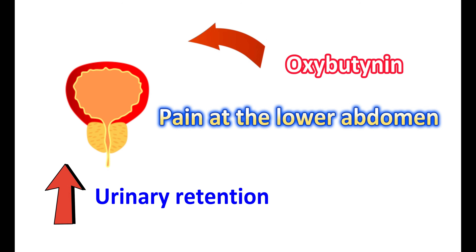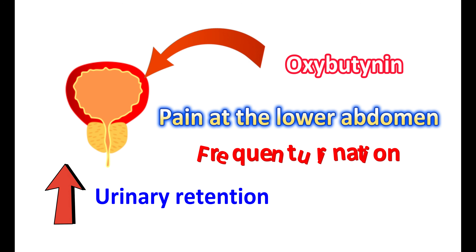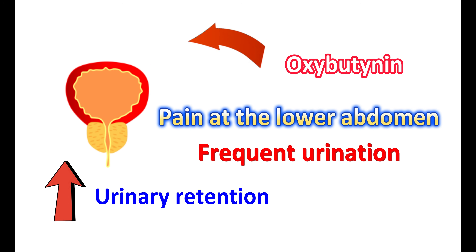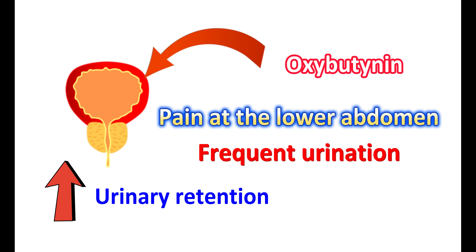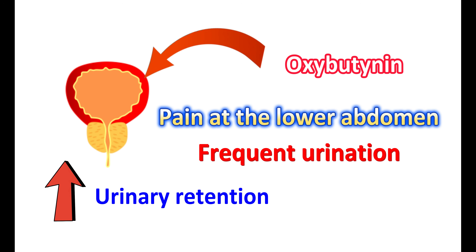Increased urinary retention may result in pain at the lower abdomen or urinary tract. You may have a weak stream of urine while urinating, and it can also result in frequent urination, which may worsen the symptoms of overactive bladder. Therefore, in people with bladder outflow obstruction, Oxybutynin should be used carefully.